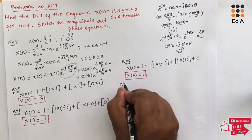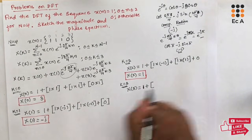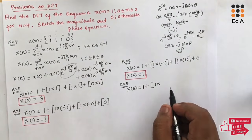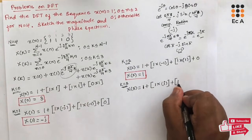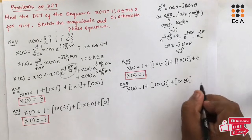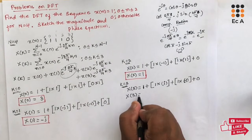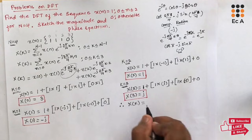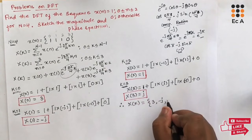Now let us put k = 3. X[3] = x[0] + x[1] * e^(-j2π*3/4) + x[2] * e^(-j2π*6/4) + 0. Substituting k = 3, the first exponential term gives j, and the second gives -1. So X[3] = 1 + 1*(j) + 1*(-1) + 0 = j.